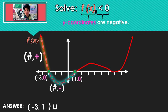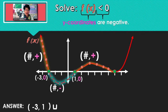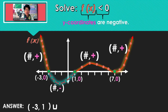We can look to the right quickly — all the points along there have positive y-coordinates. And right there, the x-intercept has a y-coordinate of 0, and all the points along that last section also have positive y-coordinates.